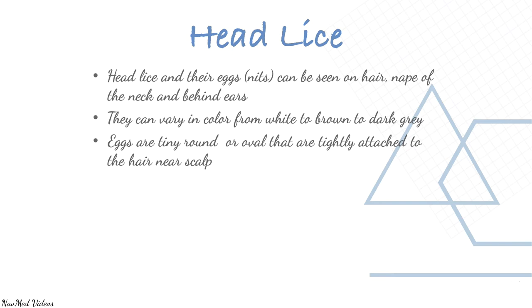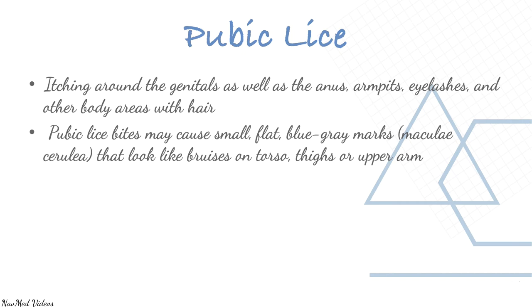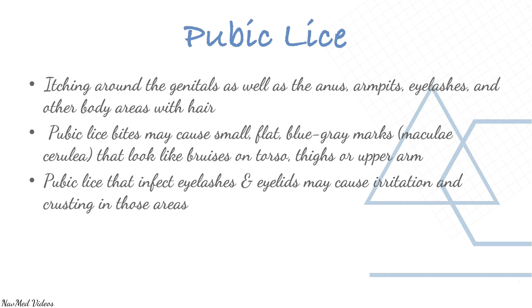Pubic lice cause itching around the genitals as well as the anus, armpits, eyelashes, and other body areas with hair. Pubic lice bites may cause small flat blue-gray marks that look like bruises on the torso, thighs, or upper arms. Pubic lice that infect eyelashes and eyelids may cause irritation and crusting in those areas. Pubic lice tend to spread by sexual contact.